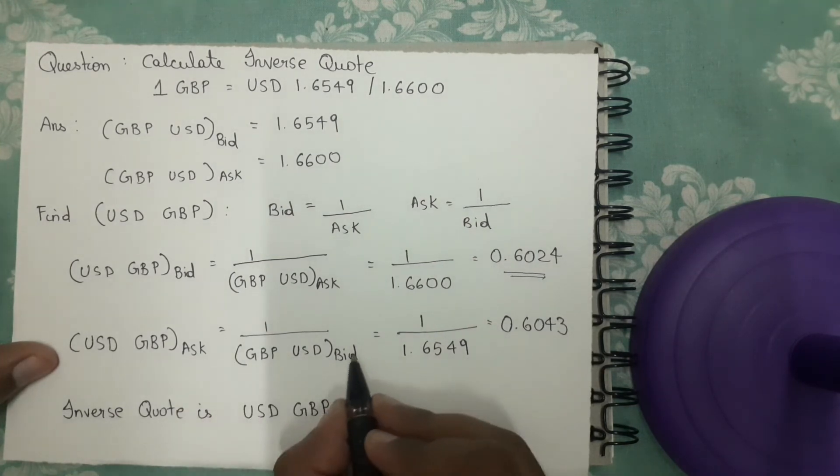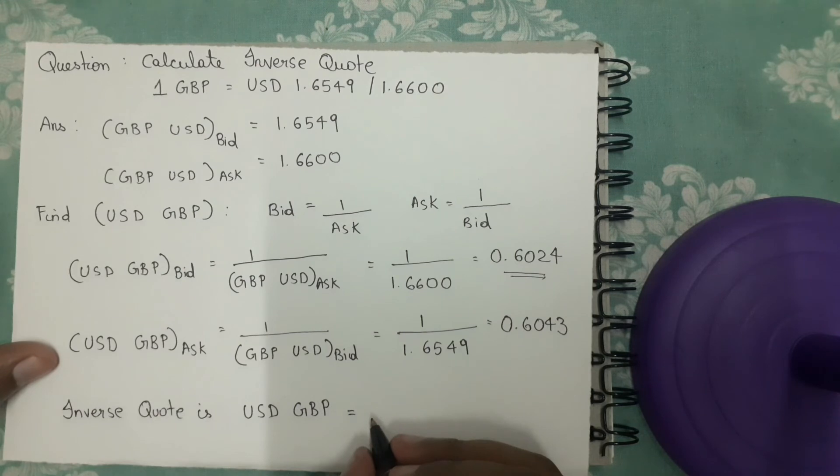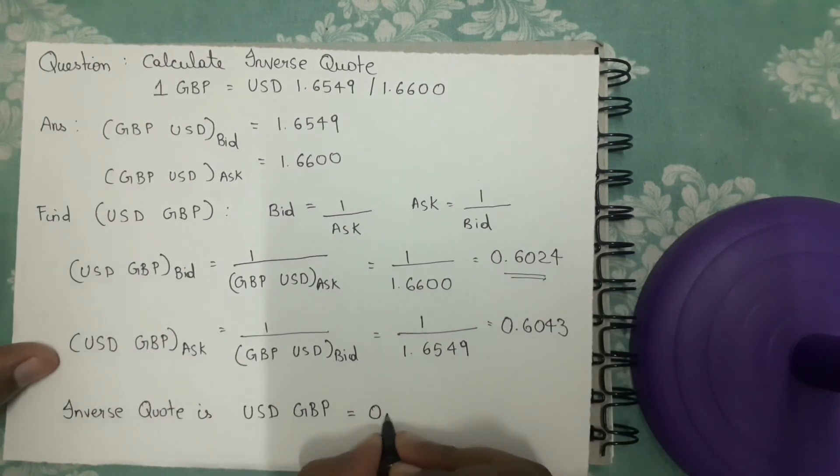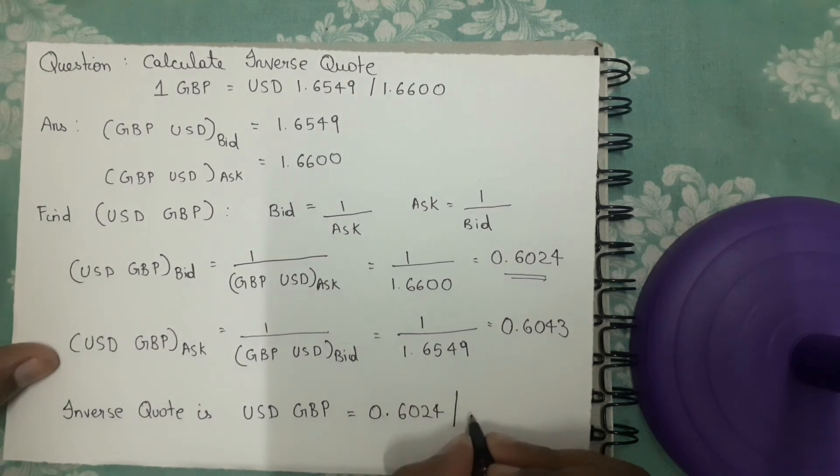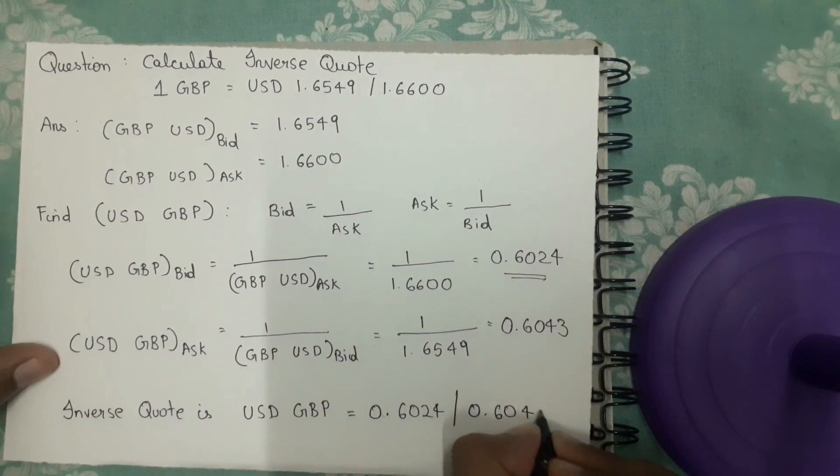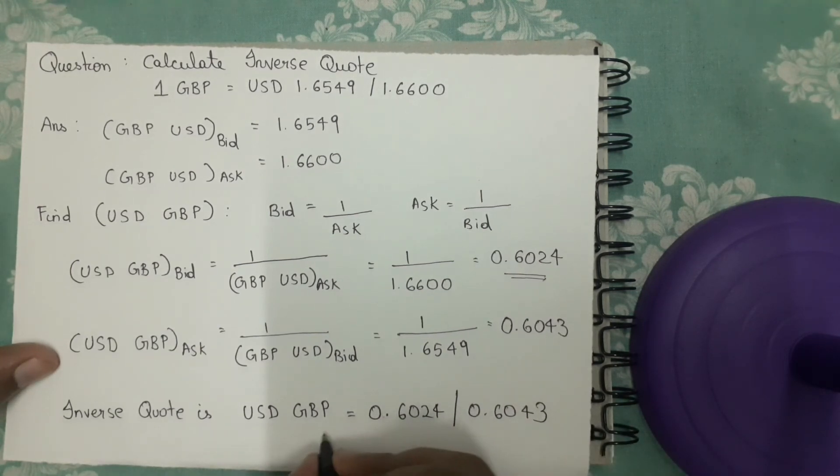First we will write the bid rate and then we will write the ask rate. Bid rate is 0.6024 and ask rate is 0.6043.